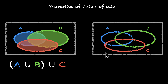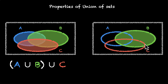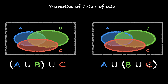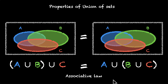If we take a different order, starting with B and C — we get B union C as the shaded region — and then add A to it, you can see that both results are equal. This is A union B union C equal to A union B union C, and this is called the associative law.